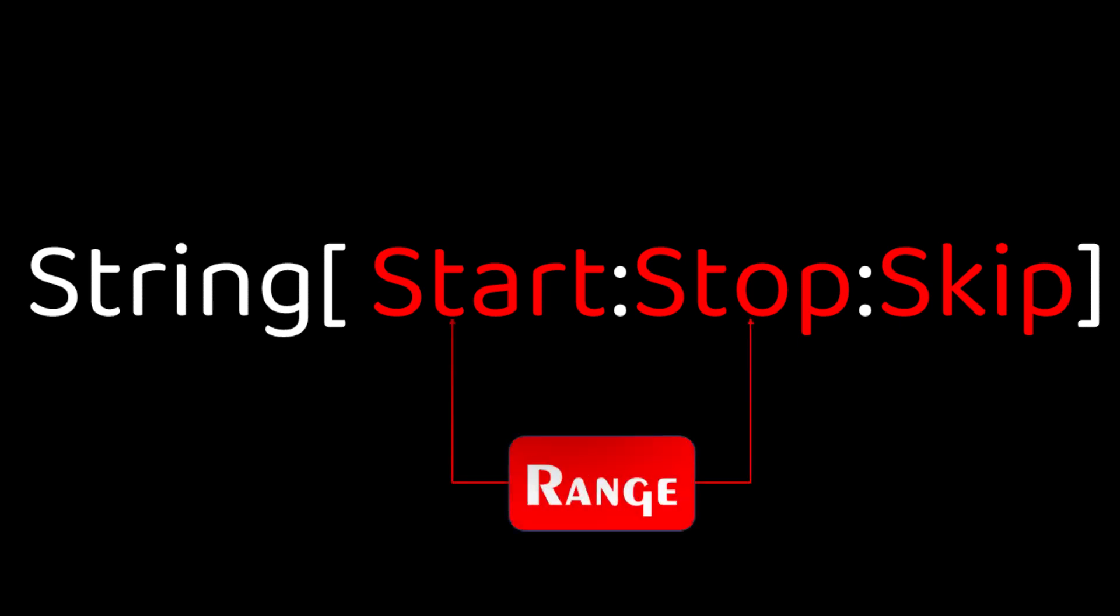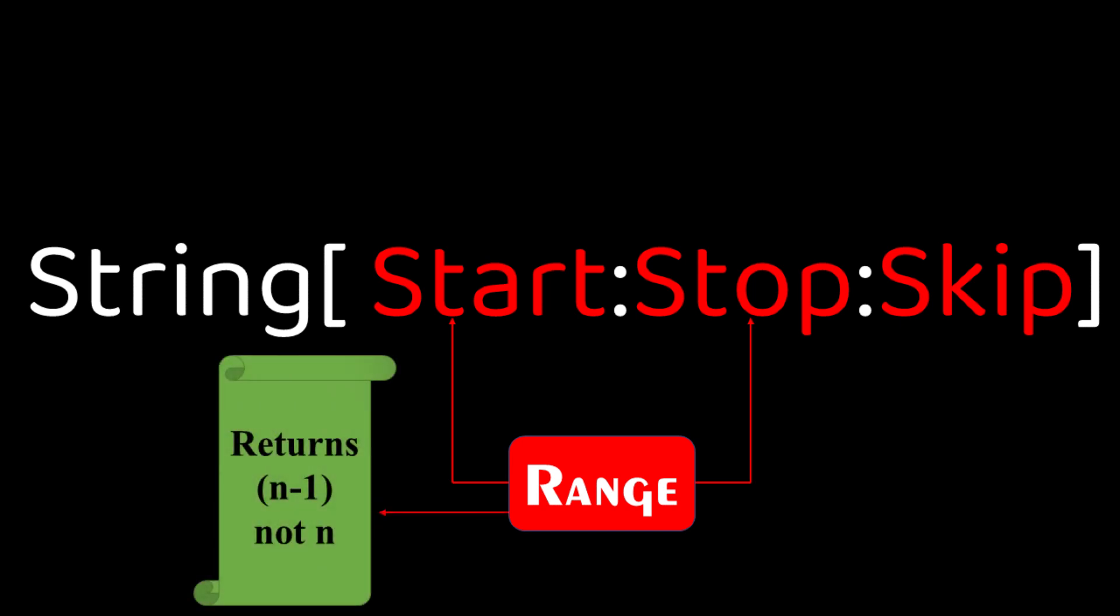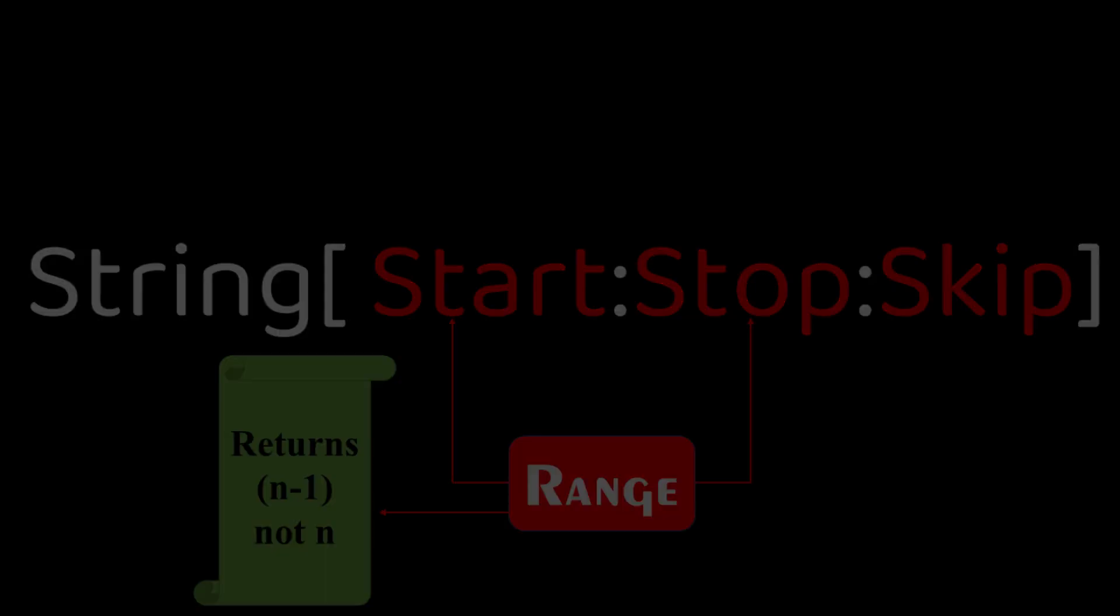String indexing takes 3 values separated by colon. They are start, stop and skip. Here, start and stop is the range of index where stop returns n minus 1 not n. So, let's solve some more examples for clarity.